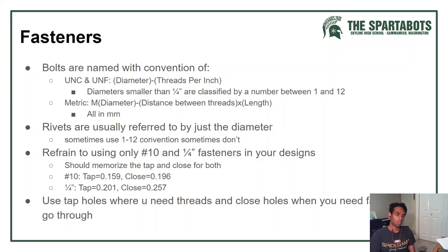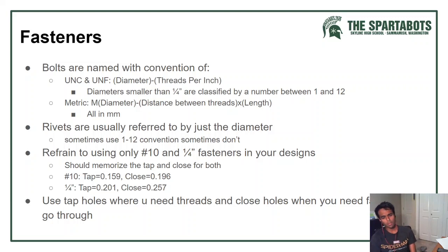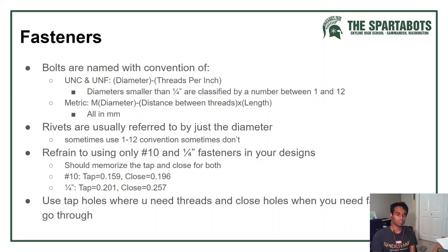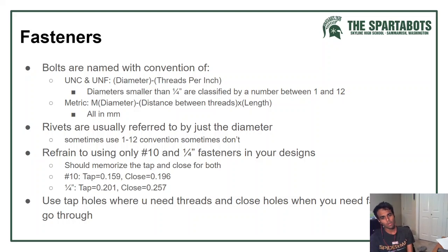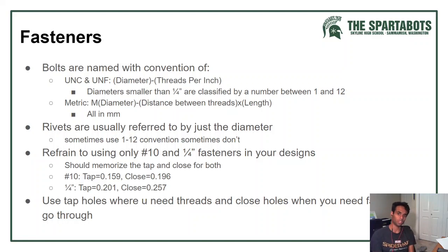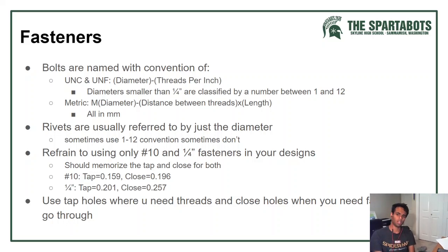Fasteners are basically bolts, rivets — things that keep mechanisms and parts together. Bolts are named using a convention depending on whether they're US or metric. For US bolts, it's diameter then threads per inch. For diameters smaller than a quarter inch, they're classified by numbers between 1 and 12, so you'll see things like 6-80 or 2-20. After a quarter inch it's written like quarter-20 or quarter-28.